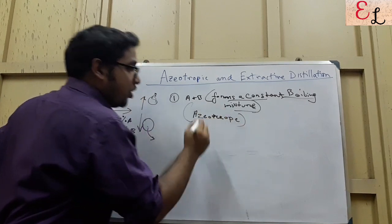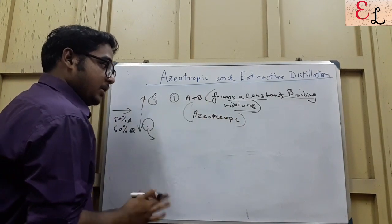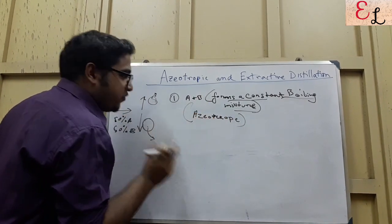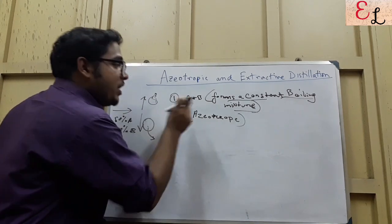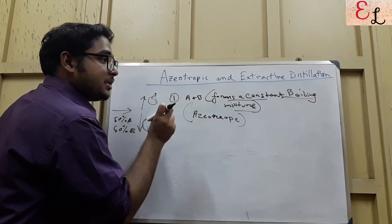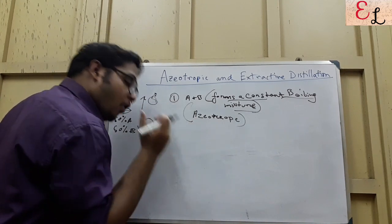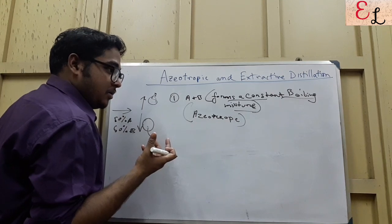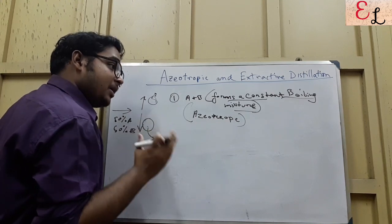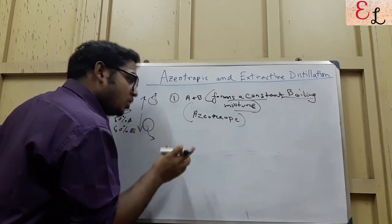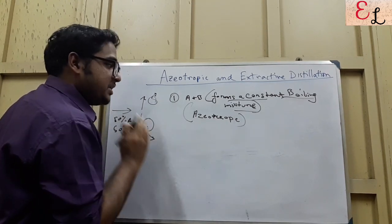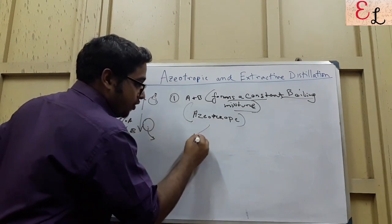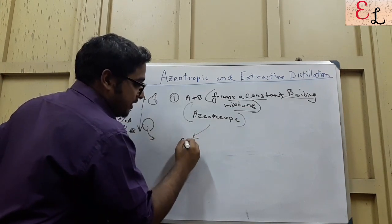An azeotrope is a type of solution where the components boil together but do not separate from each other quite easily. In this case, we follow azeotropic distillation.